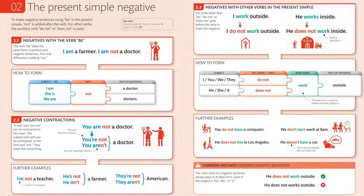Some common mistakes when forming negative sentences: the main verb in a negative sentence should always stay in its base form. So even if the subject is he, she, or it — 'he does not work outside,' NOT 'he does not works outside.' This is frequently seen in beginner-level English, but it improves with practice.